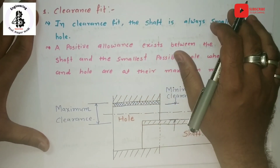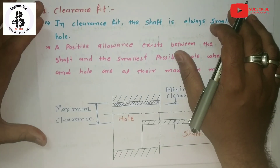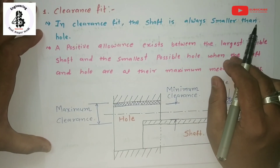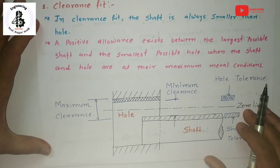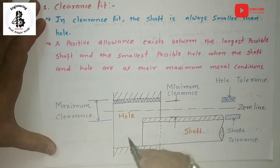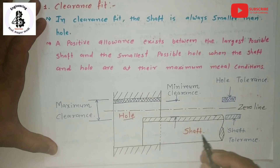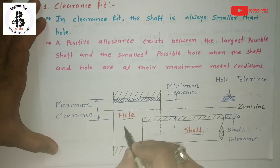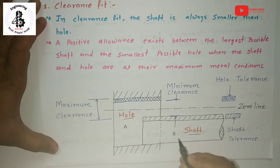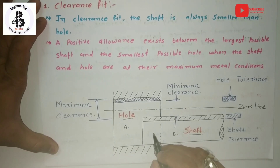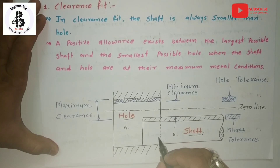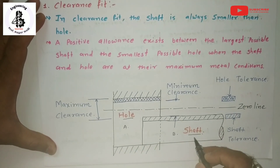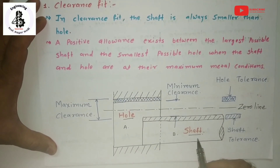Let us see the basic requirements of the clearance fit. In a clearance fit, the shaft is always smaller than the hole. There are two different systems: first, the hole system, and second, the shaft system. Suppose member A and member B are assembled together — they provide some clearance. This is what the hole system and shaft system indicate for clearance fit.